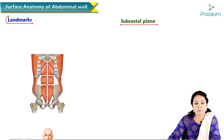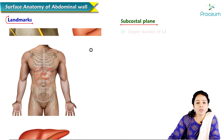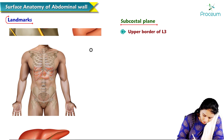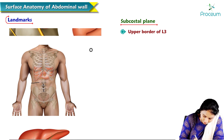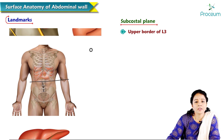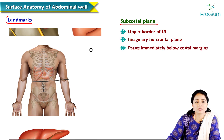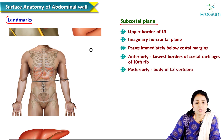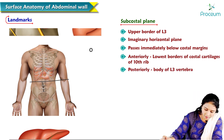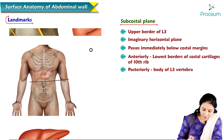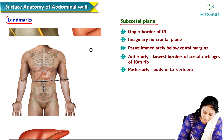The next important landmark is the subcostal plane, located along the upper border of L3 vertebra. It is an imaginary horizontal plane that passes immediately below the costal margins — anteriorly through the lowest borders of the costal cartilages of the 10th rib, and posteriorly through the body of L3 vertebra.